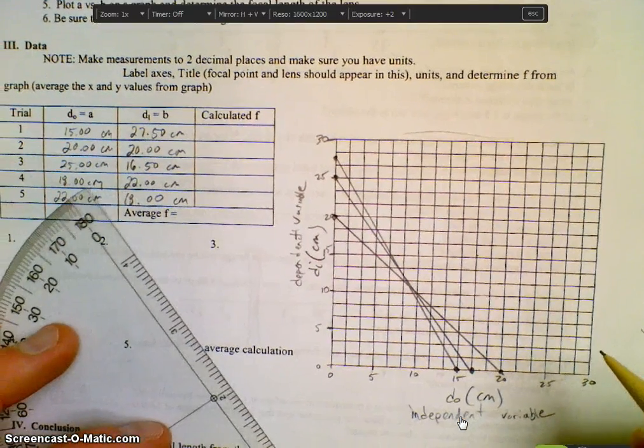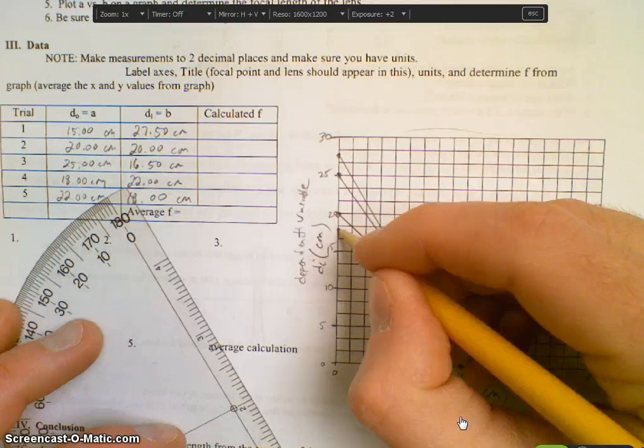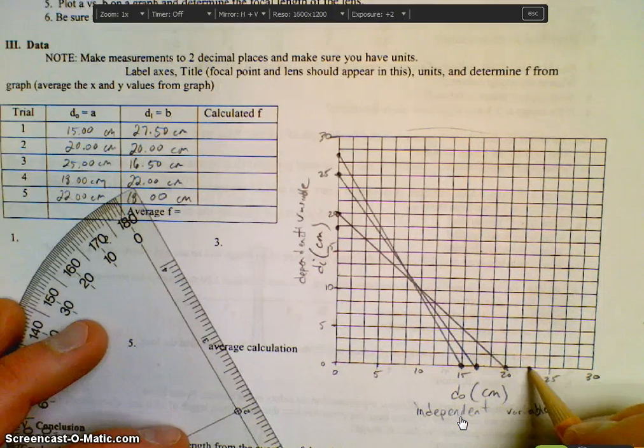And then we have 18 and 22. So this would be 17 and a half, so 18 is just going to be right above it. And then 22, this would be 22 and a half, so we're going to go right below it.